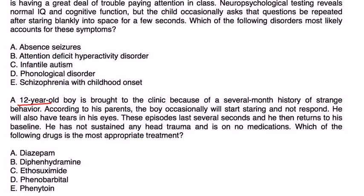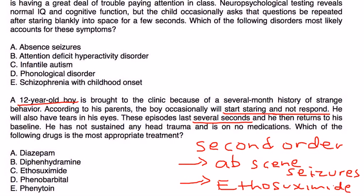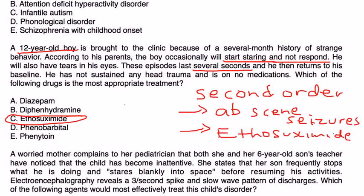A second-order question: A 12-year-old boy is brought in because of a several-month history of strange behavior. He occasionally stares and doesn't respond, has tears in his eyes, and then returns to baseline after several seconds. He has no head trauma and is on no medications. Which drug is the most appropriate treatment? This is second-order — you first identify the diagnosis as absence seizures, then determine the treatment of choice: ethosuximide.